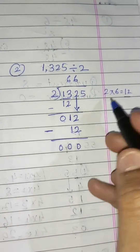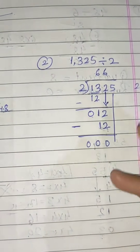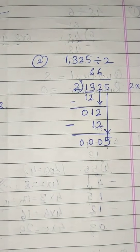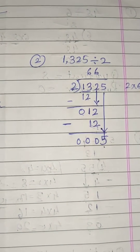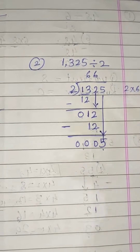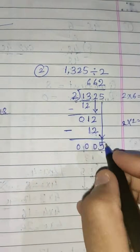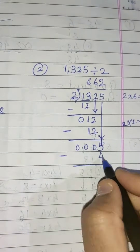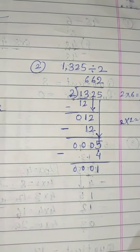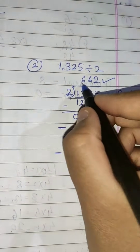There is one more digit remaining, so bring down 5. Does 5 appear in the 2 times table? No. Take the lesser number — 2×2=4; 2×3=6, which is bigger, so take 2×2=4. Write 2 in the quotient. Subtract: 5 minus 4 is 1. Write 0 as there are no more digits. So the quotient is 662 and the remainder is 1.